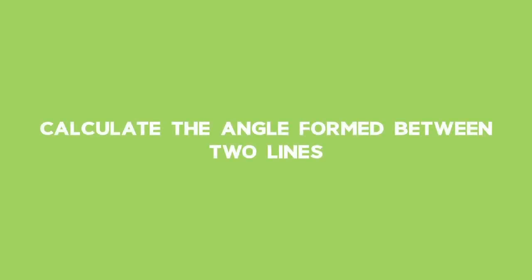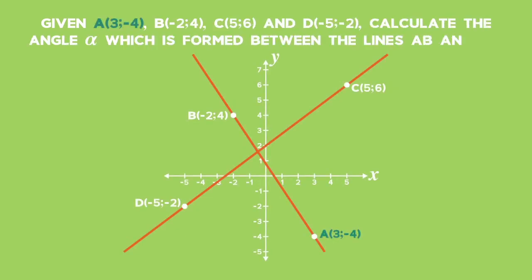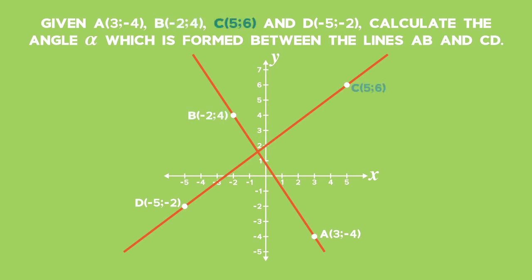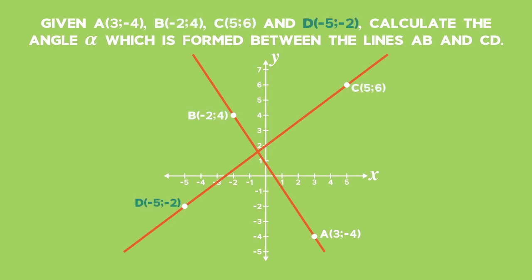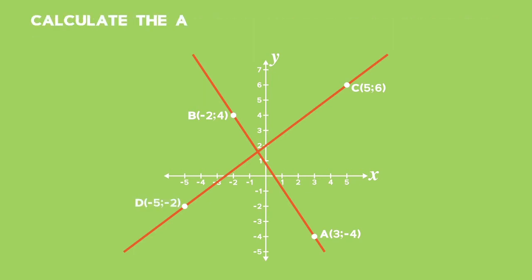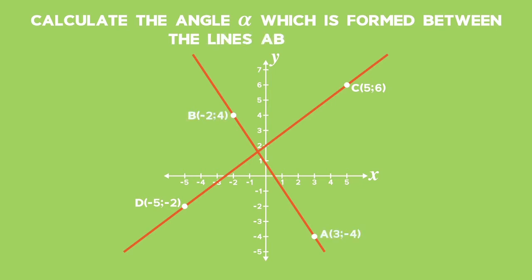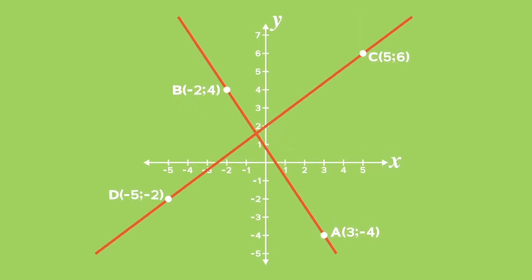Example 3: Calculate the angle formed between two lines. Given points A(3, -4), B(-2, 4), C(5, 6), and D(-5, -2), calculate the angle alpha formed between the lines AB and CD. We cannot get to that angle directly, so first we need to work out the angles of inclination of lines AB and CD, and then use geometry to work out alpha.